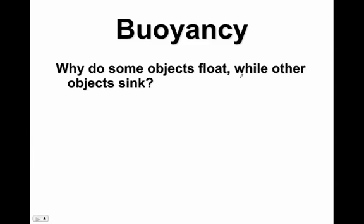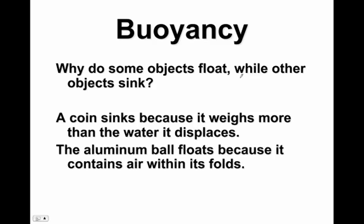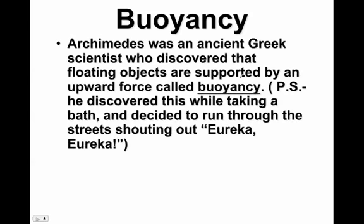So the other thing we want to consider is why do some objects float while other objects sink? A coin sinks because its weight, the force of gravity, is more than the amount of water it displaces. An aluminum ball floats because it contains air within its folds. Good old Archimedes was an ancient Greek scientist who discovered that floating objects are supported by an upward force called buoyancy.